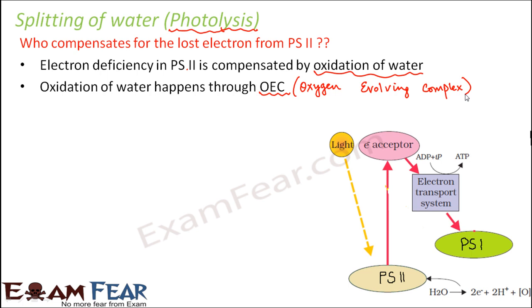The oxygen evolving complex is a protein structure — essentially an enzyme, since enzymes are mostly proteins. It has a cofactor consisting of a cluster of manganese ions. This OEC is a protein structure with manganese ions, and this manganese complex is highly oxidized, enabling it to transfer electrons from water to PS2.